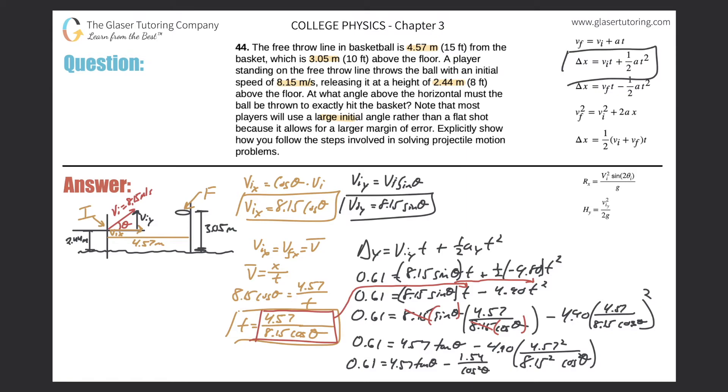So now let's clean it up a little more. So we have 0.61 is equal to 4.57 times the tangent of theta minus. So let's do the math. We have 4.57 squared divided by 8.15 squared, and then multiply that by 4.9. So we get a value of 1.54. So it's going to be negative 1.54 all over cosine squared theta.